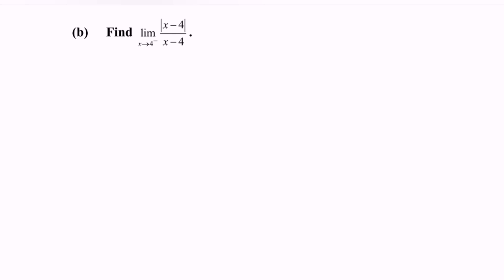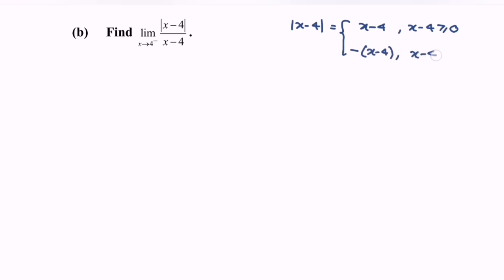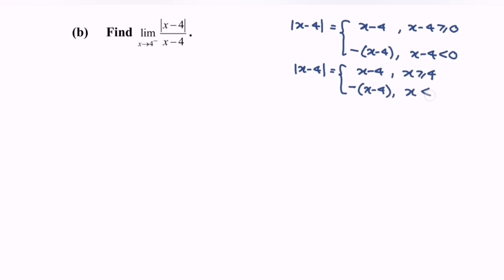Notice that we have the modulus of (x minus 4). Kindly define it. The modulus of (x minus 4) can be expressed as a piecewise function: (x minus 4) where x minus 4 is greater than or equal to 0, i.e., x greater than or equal to 4; and negative (x minus 4) where x minus 4 is less than 0, i.e., x less than 4.